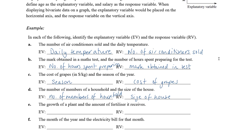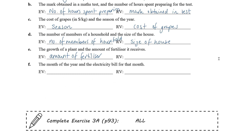The growth of a plant and the amount of fertilizer it receives. Putting fertilizer on the plant is likely to affect the growth, whereas the growth is not likely to affect whether or not you put fertilizer on the plant. So the explanatory variable is the amount of fertilizer and the response variable is the growth of the plant.